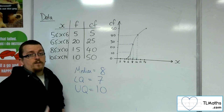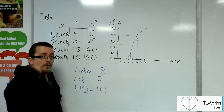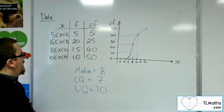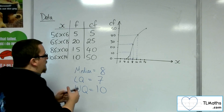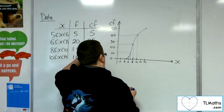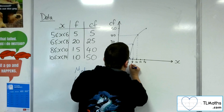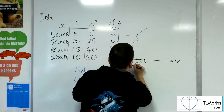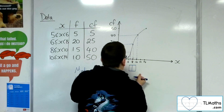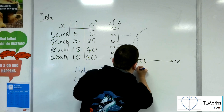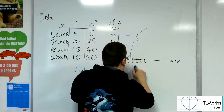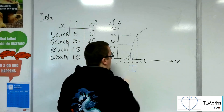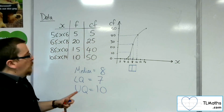From those values you can draw a box and whisker diagram, since you've got the key bits of information. Using the same scale, we draw a box with the lower quartile, median, and upper quartile marked.